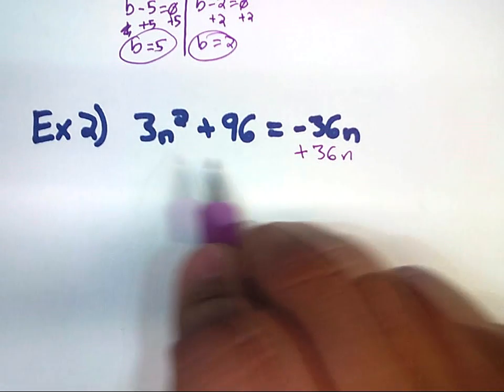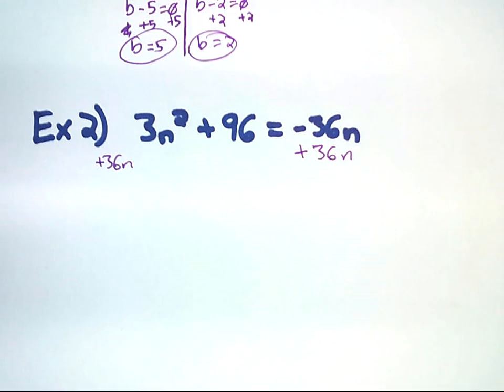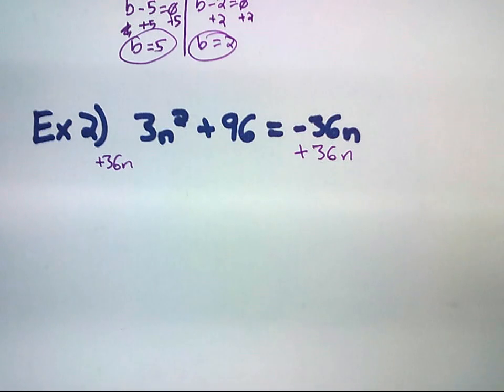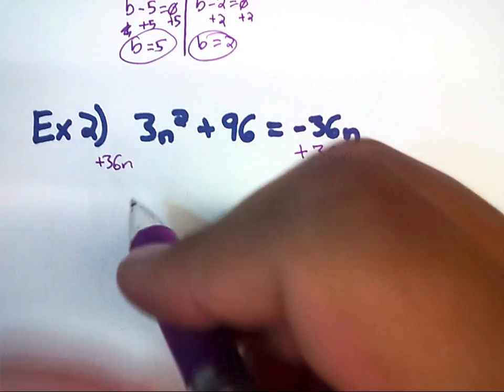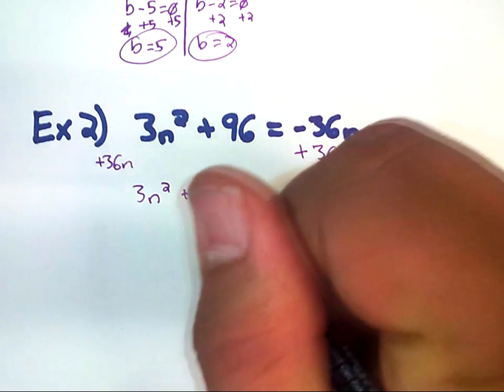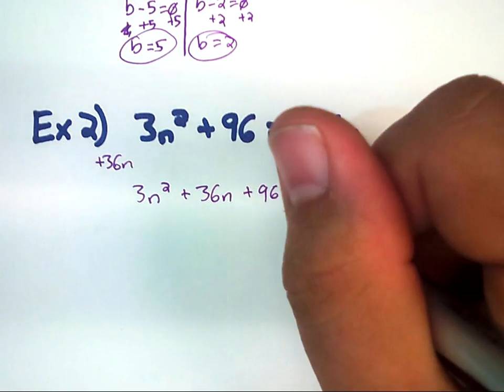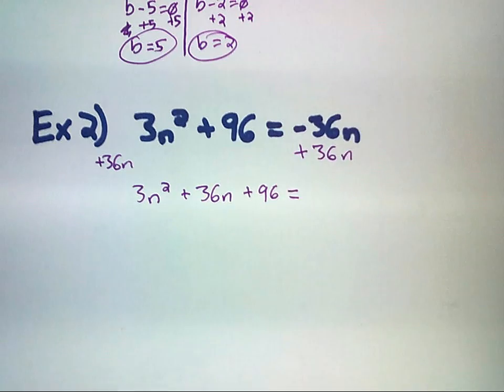Again, it doesn't match anything else over here. So, I'm just going to show that it doesn't match, but it's still getting added to that side. So, 3n squared. I'm going to rewrite this. 3n squared plus 36n plus 96 equals 0.